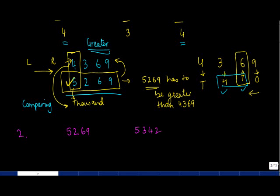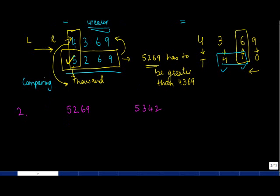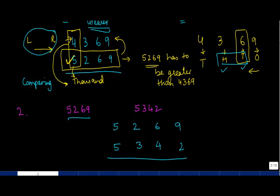How will you compare this? If I just follow what I told you earlier, I will just write 5269 first. 5269 and then I will write 5342. So I told you to compare from left to right. If I take the left one first, which is these two, what do I see?